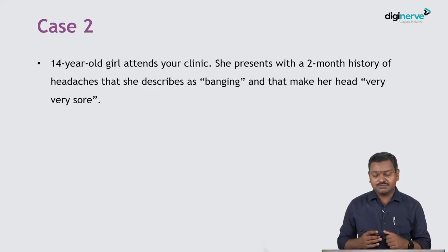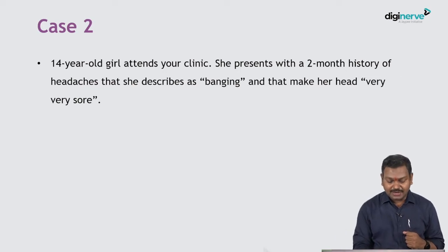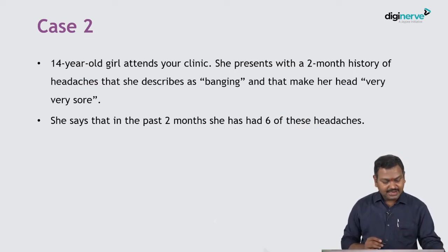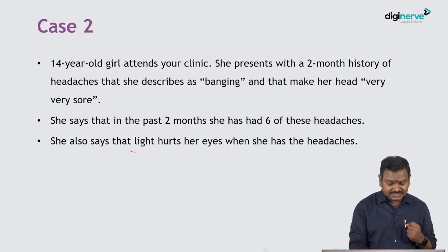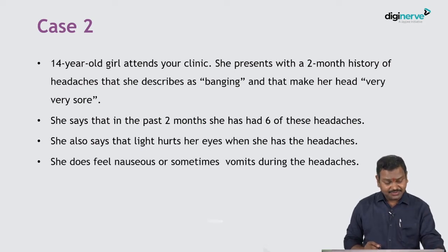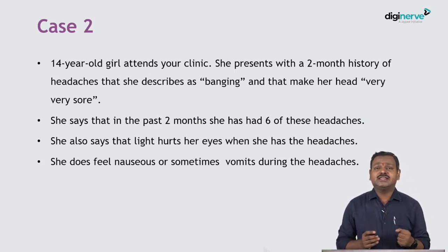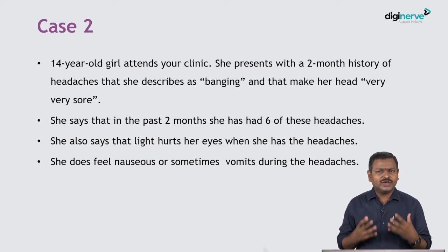A 14-year-old girl comes to your clinic with a two-month history of headache which is of a banging nature and makes her head feel very sore. In the past six months she has had almost six such episodes. Light hurts her and triggers the headache. She feels nauseous sometimes and vomits during the headache. She has no other symptoms besides photosensitivity and nausea and vomiting as precipitating and associated features.